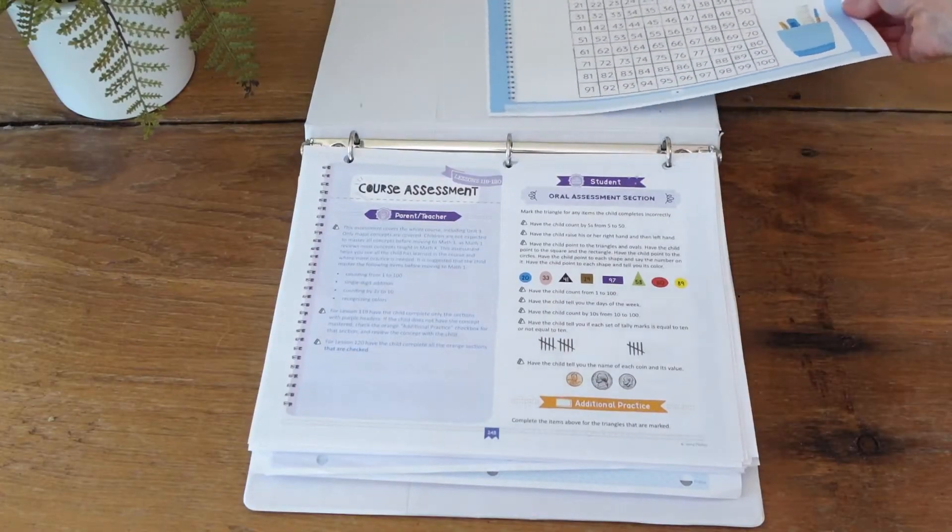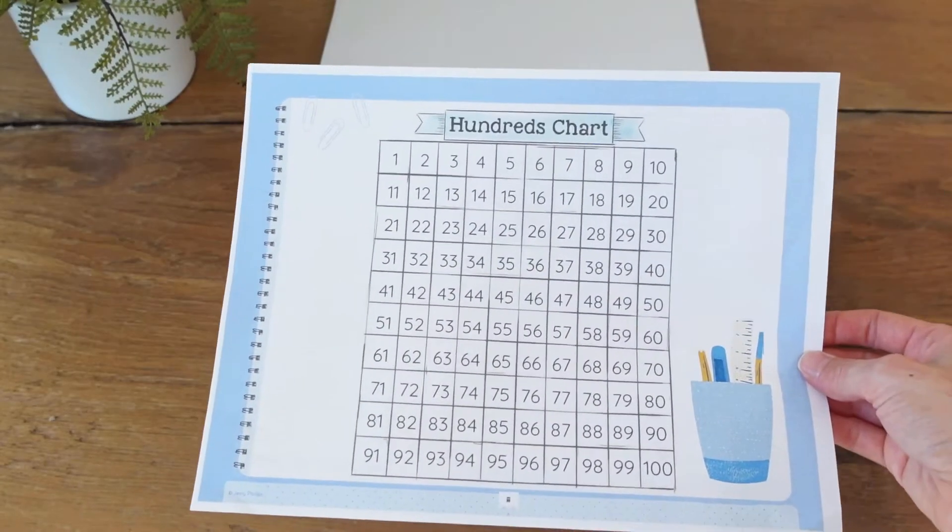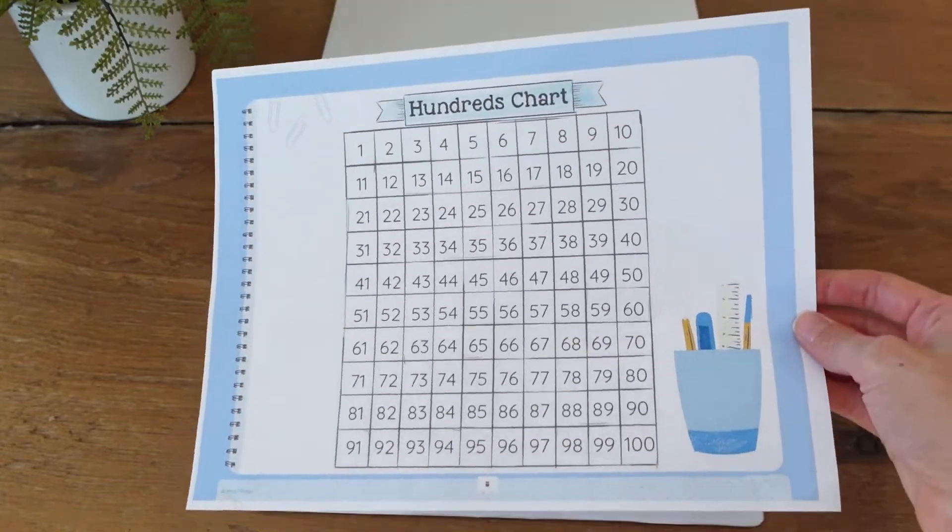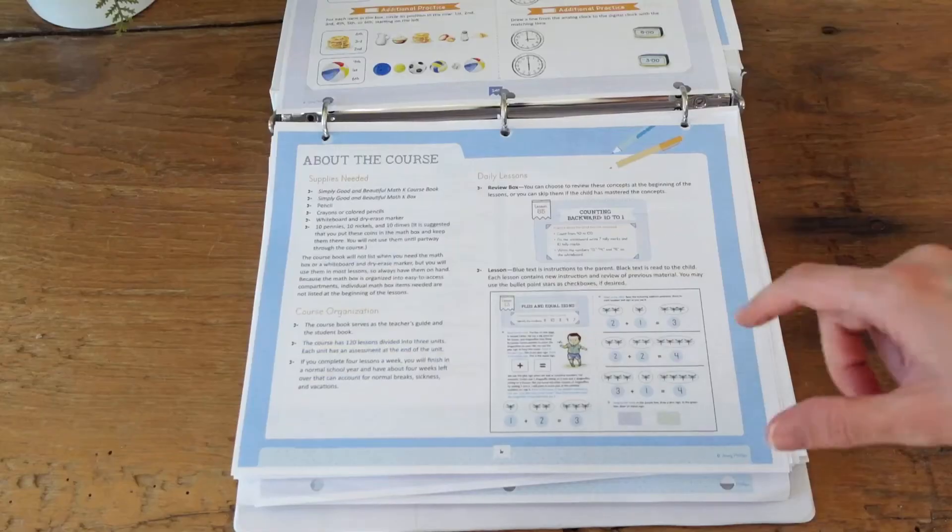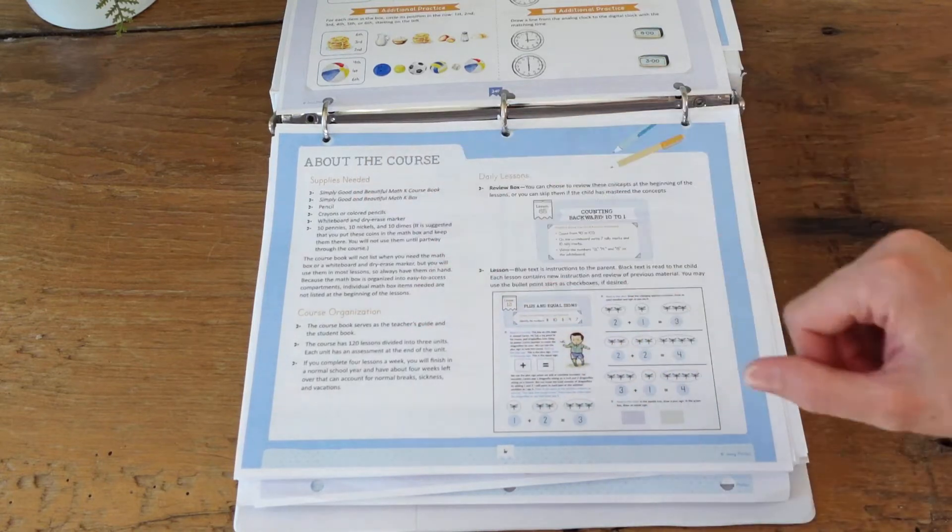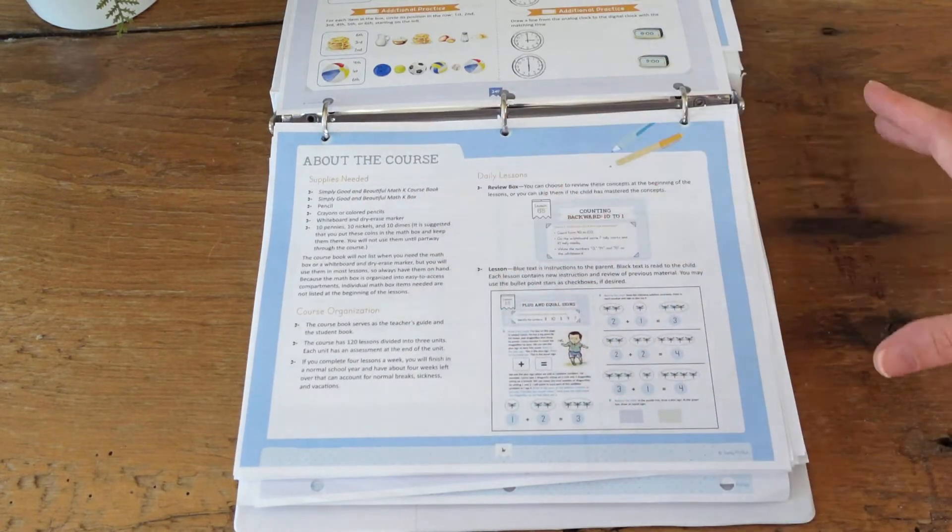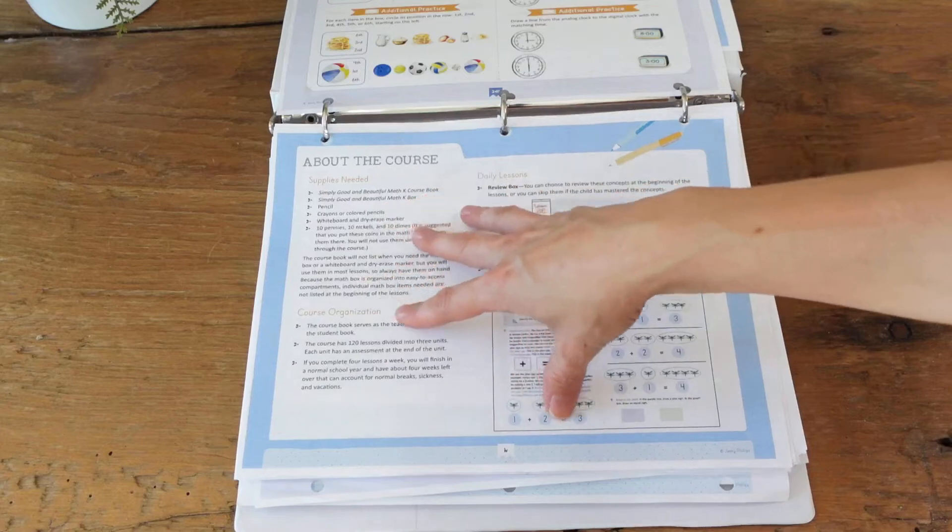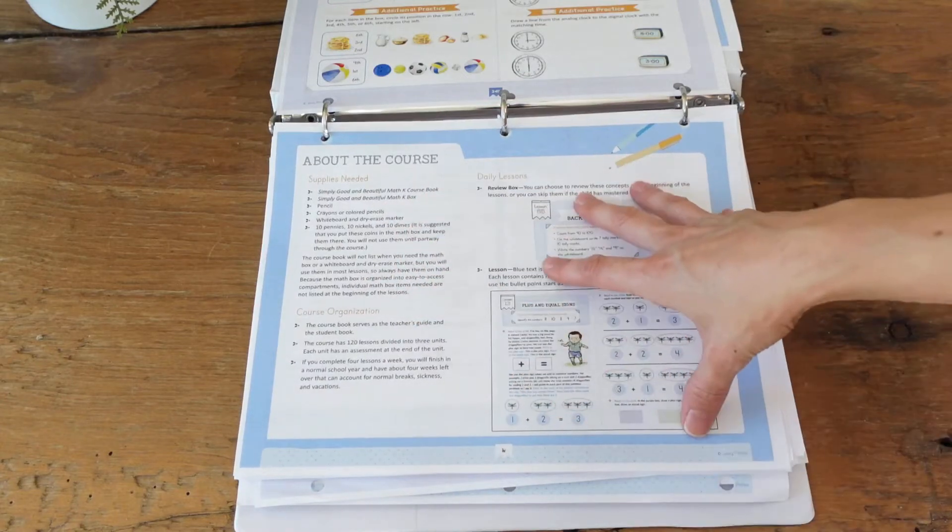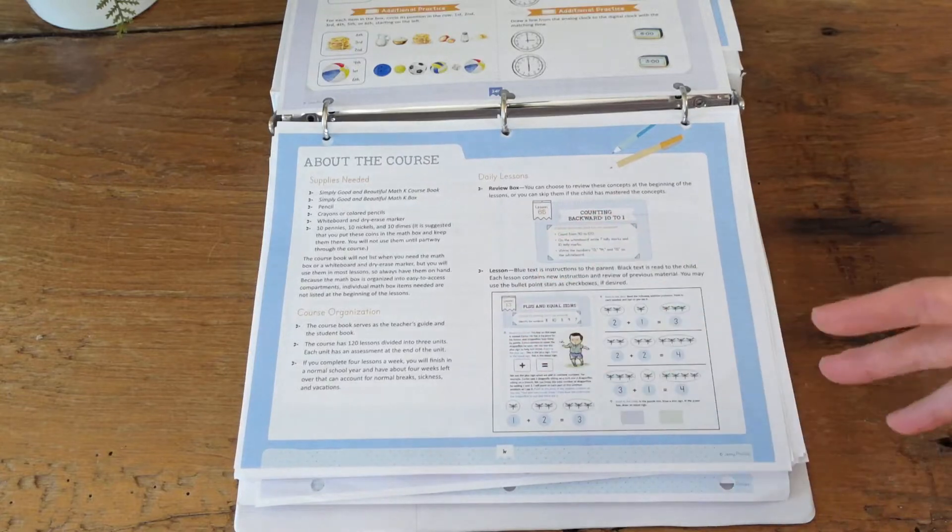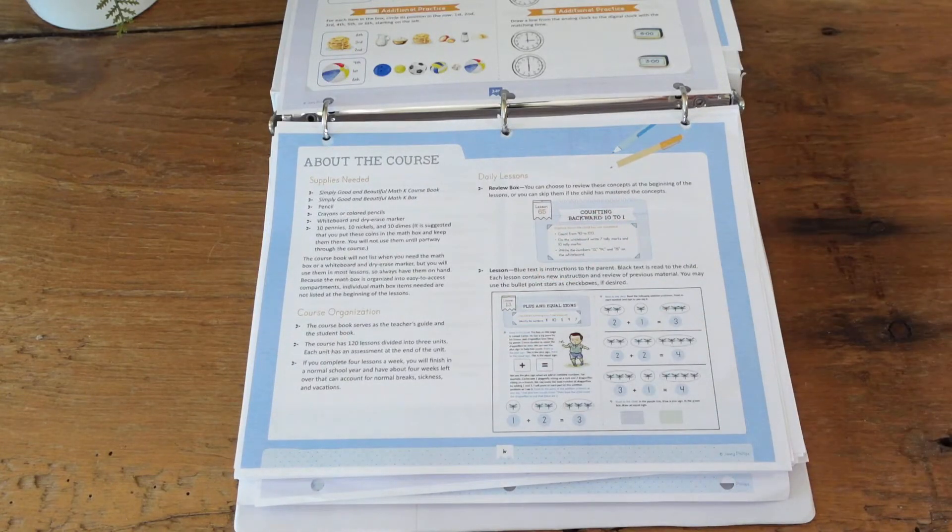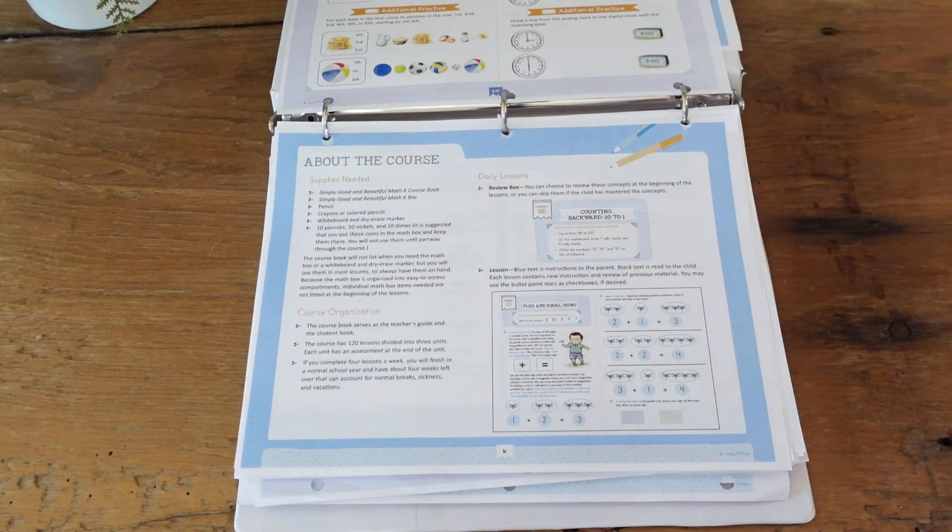This is the hundreds chart that comes with the curriculum and I just keep it in here with the binder so she has this to look at throughout all of the lessons if needed. About the course, it's going to have all of your supplies needed. Of course there's your Math K course book and the Simply Good and the Beautiful Math K box. I do not have the math manipulative box, however I found that typically we can do things like this without necessarily needing it. You will not be able to do 100% of the activities but you can make do with what you have at home.